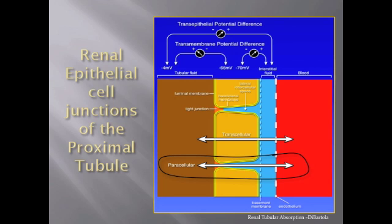Renal epithelial cell junctions of the proximal tubule can be leaky, whereas junctions of the distal convoluted tubule are more difficult for solutes to cross. The primary target of chloroform in the kidney are epithelial cells of proximal tubules.